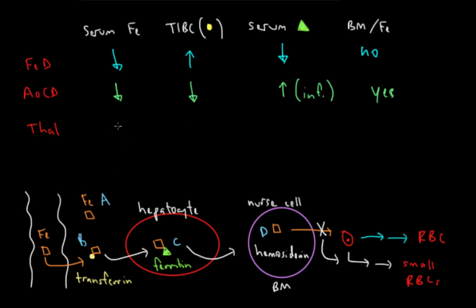In thalassemia, we have plenty of iron around. So our serum iron is actually going to be normal to high, while our TIBC is going to be normal. Our serum ferritin is going to be normal to high, again, because we have plenty of iron available to bind with ferritin. And we're definitely going to see iron in the bone marrow, because it's available, it's just not being used appropriately to make correct versions of hemoglobin.